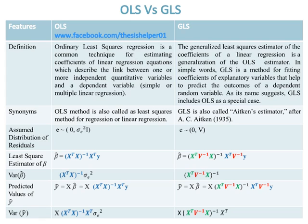The variance of Beta Cap in OLS is: Var(Beta Cap) = (X^T X)^(-1) multiplied by the variance of error. While the variance of Beta Cap in GLS is: Var(Beta Cap) = (X^T V^(-1) X)^(-1).